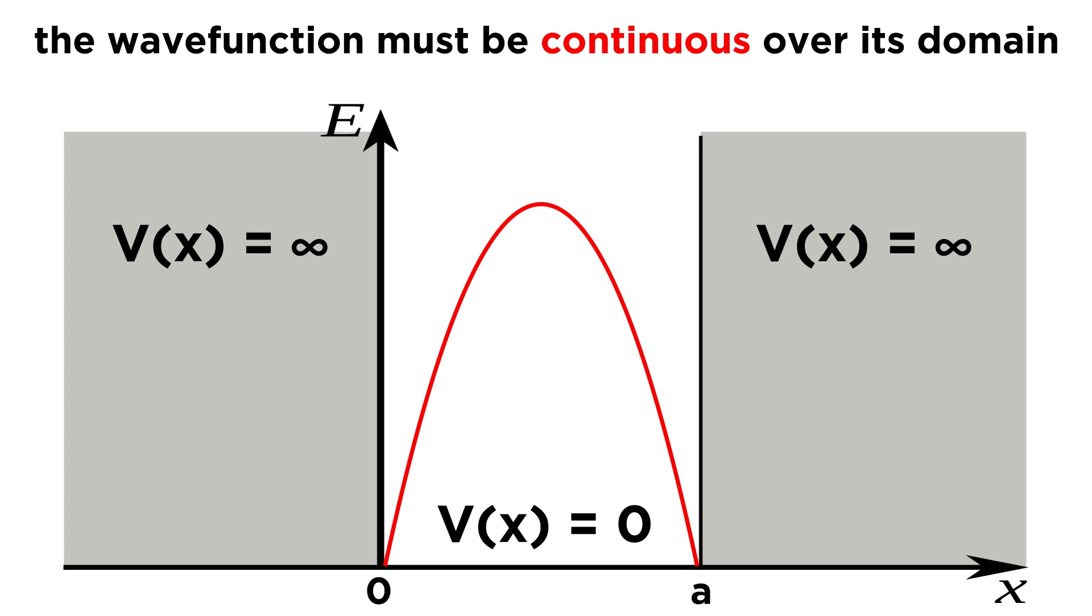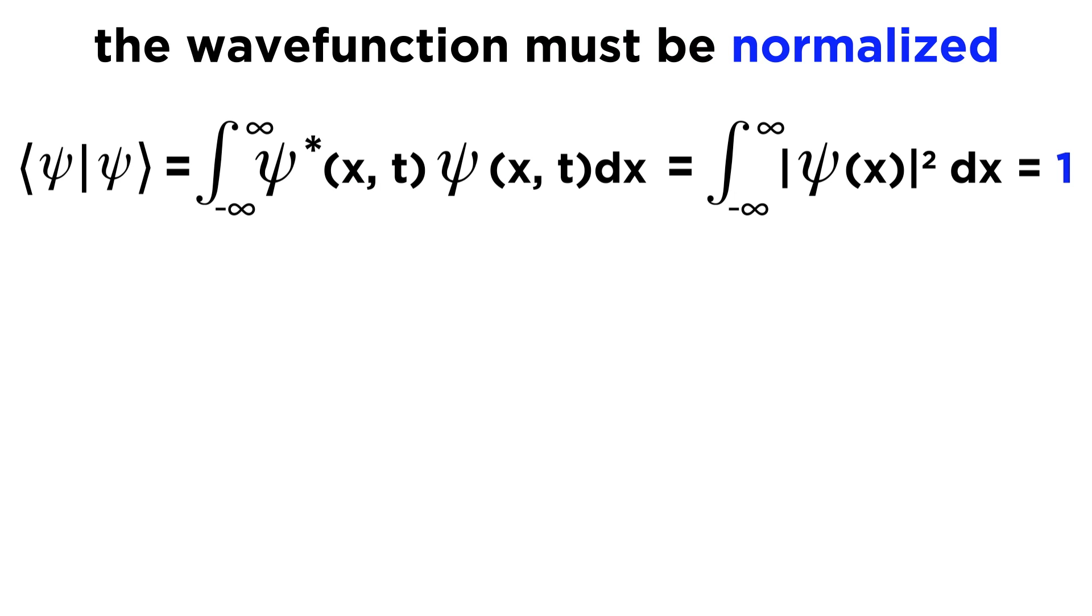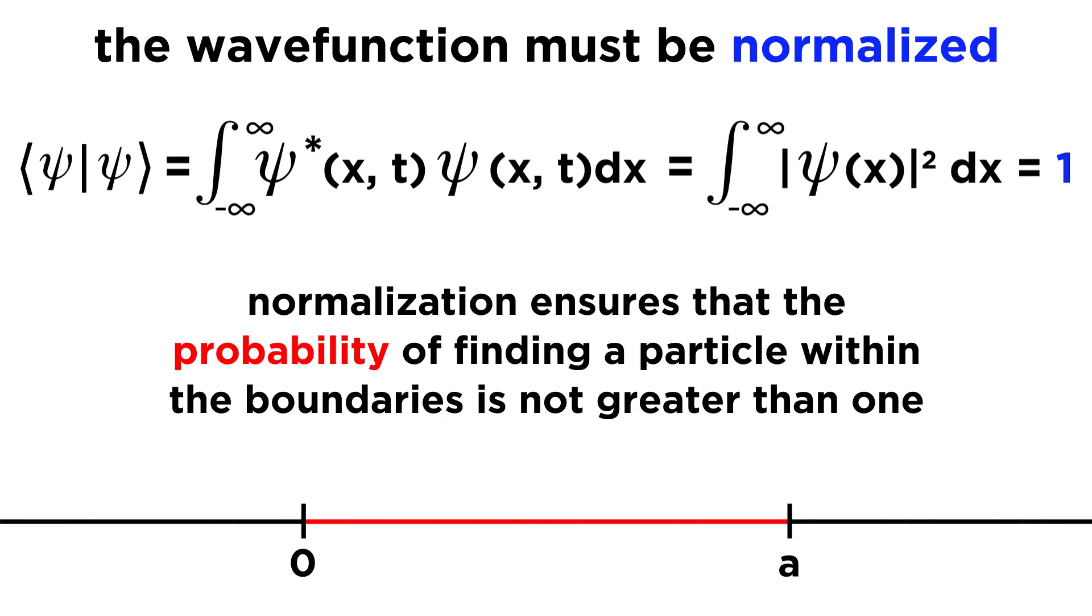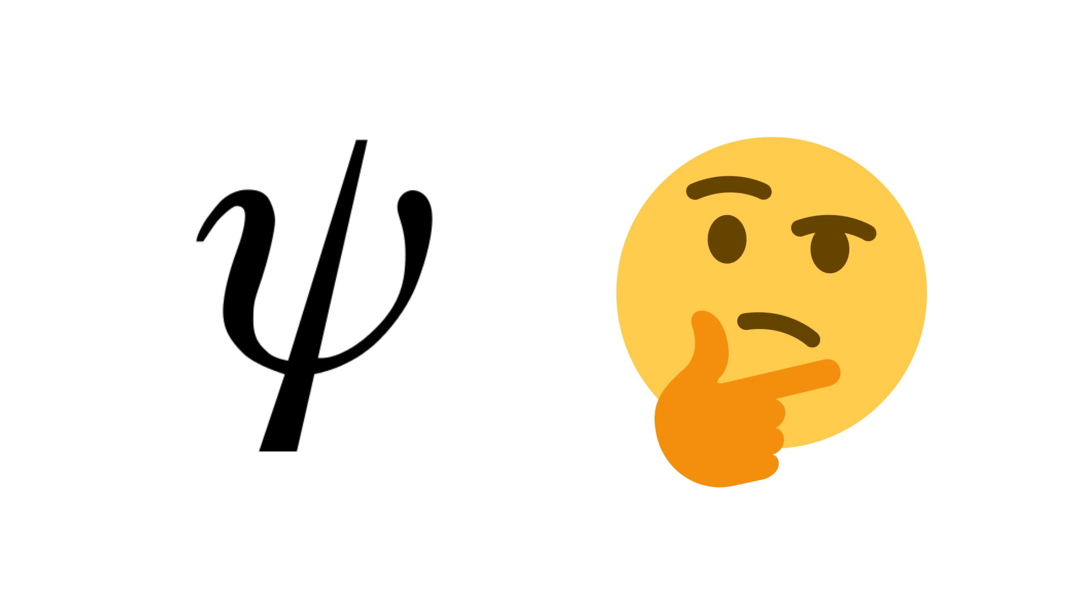A good way to start is to analyze the steps we took to solve the equation. First recall that we imposed the condition that the wavefunction must be continuous over its domain of existence. This was because the wavefunction must equal zero where the potential is infinity, including the boundaries of the well, and the wavefunction must have some nonzero value where the potential is zero, or within the well. And second, we imposed the condition that the wavefunction must be normalized.